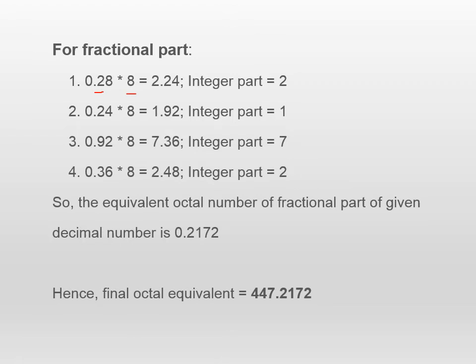To convert a fractional decimal number to octal, we multiply it by 8 and note down the integer part and the fractional part each time. So 0.28 multiplied by 8 gives 2.24 — integer part is 2, fractional part is 0.24. Then 0.24 multiplied by 8 gives 1.92 — integer part is 1, fractional part is 0.92. Then 0.92 multiplied by 8 gives 7.36 — integer part is 7, fractional part is 0.36. Then 0.36 multiplied by 8 gives 2.48 — integer part is 2, fractional part is 0.48.